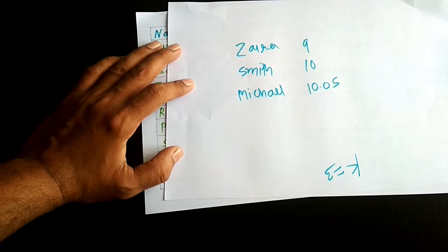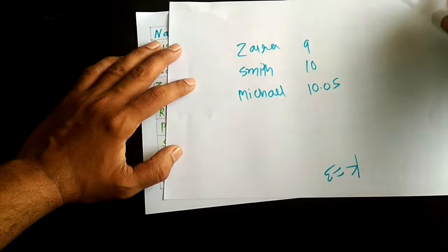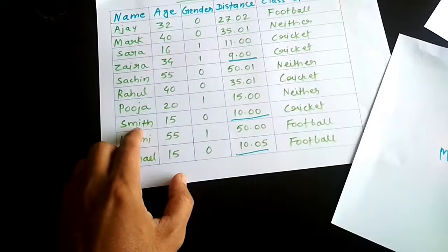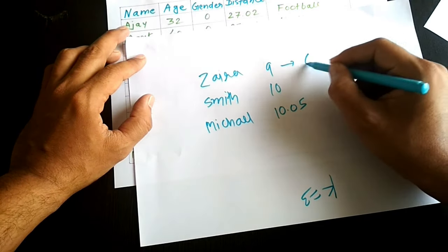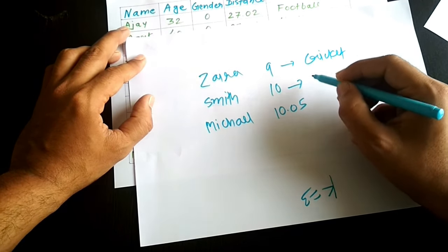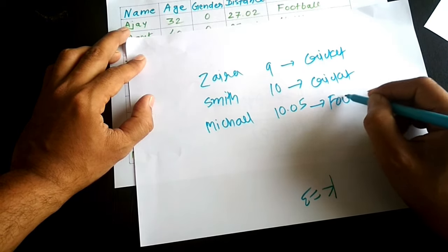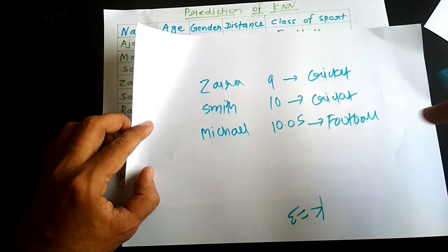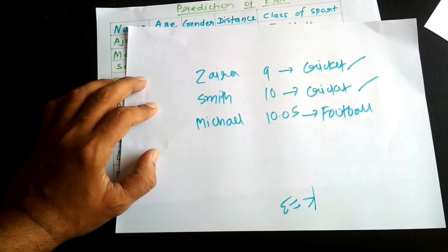Now we look at the classification of these three nearest neighbors. Zaira likes cricket, Smith likes cricket, and Michael likes football. So among the three nearest neighbors, the classifications are: cricket, cricket, and football.